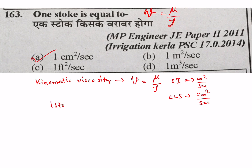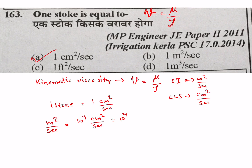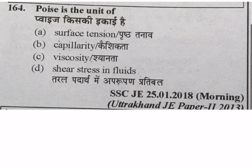The SI unit of kinematic viscosity is meter square per second; CGS unit is centimeter square per second. The conversion between stoke and SI unit is important: one meter square per second equals 10 to the power 4 centimeter square per second, or 10 to the power 4 stokes. So one stoke equals 10 to the power minus 4 meter square per second.